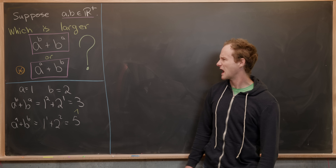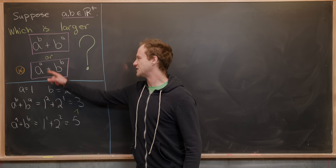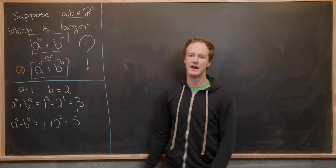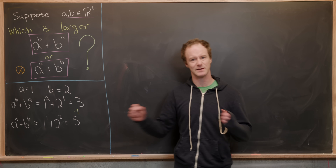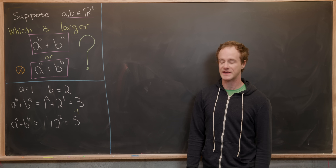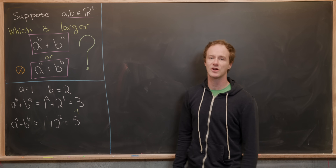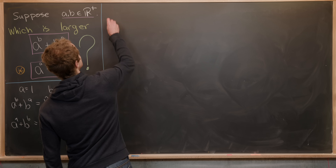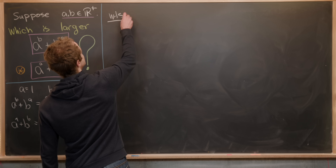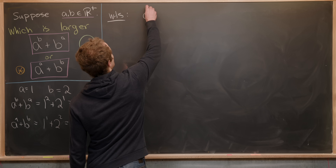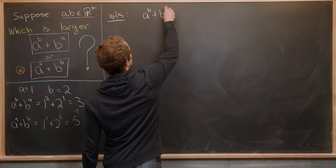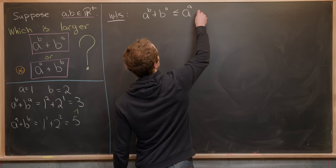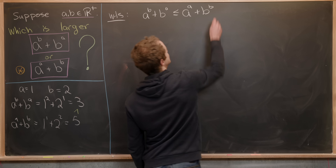So we should expect A to the A plus B to the B to be larger than A to the B plus B to the A. That's kind of beautiful because this object has more symmetry built into it. The other is kind of anti-symmetric. So what we want to show is that A to the B plus B to the A is always less than or equal to A to the A plus B to the B.